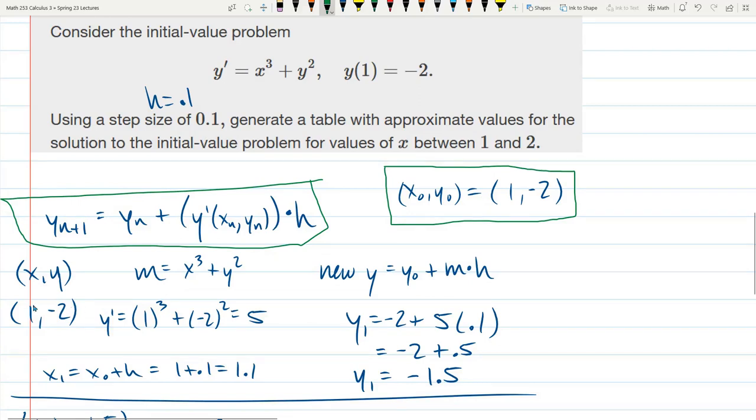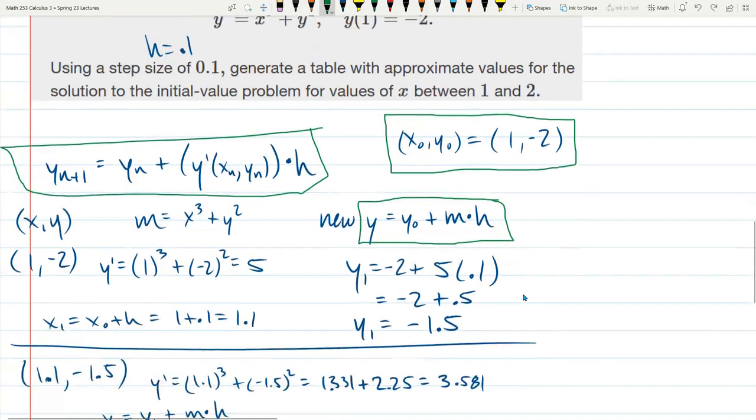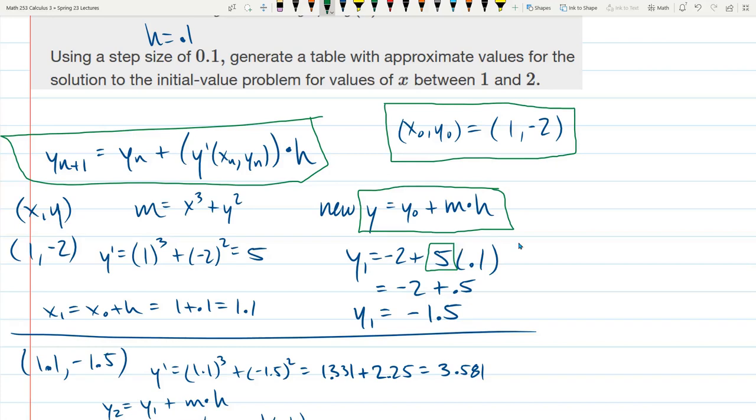Now, here I have the first iteration. So I have the initial x naught, y naught, 1, negative 2. I had to find my slope first, and I plugged in, right here, is the slope. You just plug in the right x, y values, and the first numbers are easy. They're just 1 and negative 2, so you plug that in. 1 cubed is 1, negative 2 squared is 4, 1 plus 4 is 5. That's our slope. And then I just rewrote that same formula with just the letter m instead of y prime of all that stuff. So I swapped in the m value we just computed, which was 5 multiplied by h, and added negative 2. And that is our next y value, which we'll call y1. So we start with y0, we just got y1, is negative 1.5.